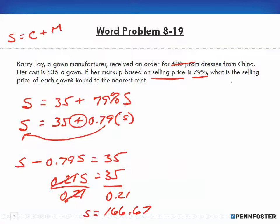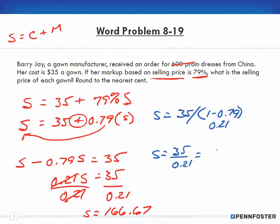And then if you wanted to check it, you can take your S would be equal to the 35 divided by 1 minus your 0.79. Because remember, we're talking about the reciprocal here. So that's going to be the 0.21. And so S is going to be equal to the $35 divided by the 0.21. And of course, that's going to be 166.67.